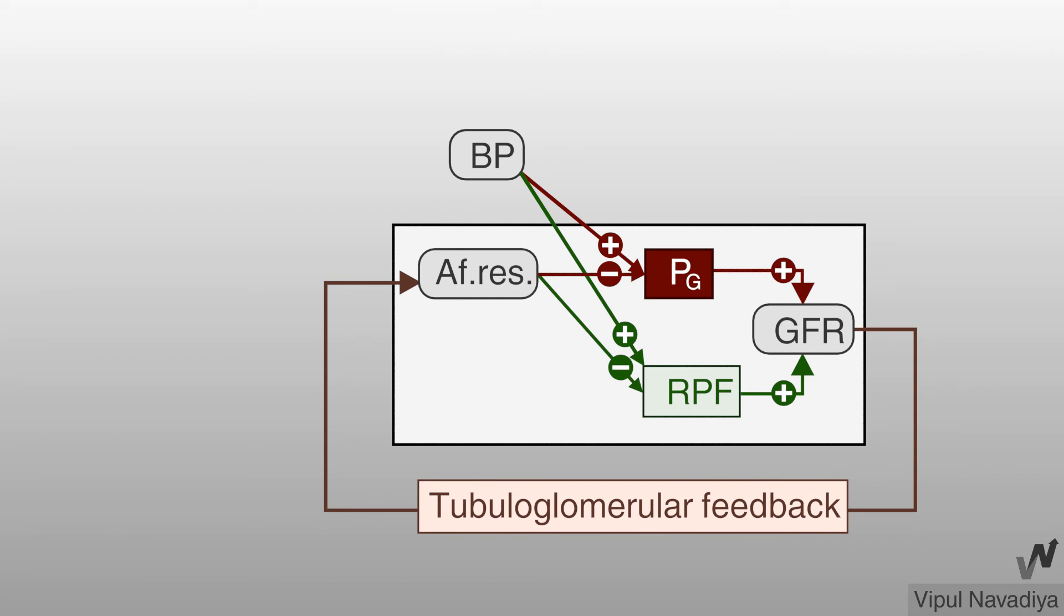Even a slight change in GFR is sufficient to activate tubuloglomerular feedback which almost instantaneously counteracts the initial change. Therefore, GFR actually doesn't change much. So this is how tubuloglomerular feedback prevents changes in GFR. This concludes autoregulation.